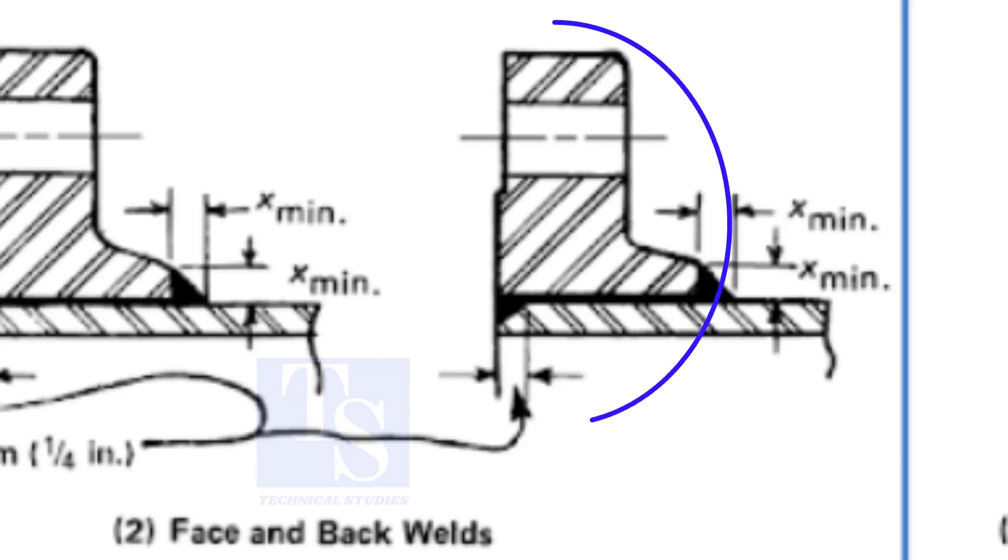In the third method, you can see the face of the pipe and the flange are the same. Here, the end of the pipe is beveled.